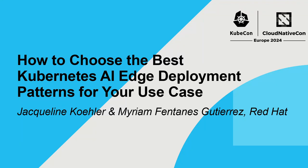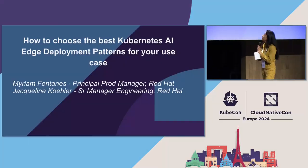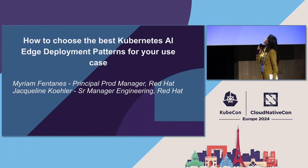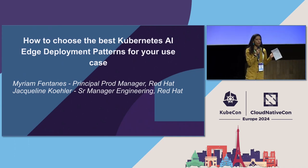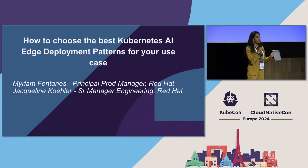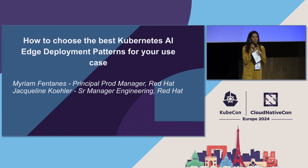Thank you so much for coming to the session. I see a lot of familiar faces. I hope you guys like it. So we're going to talk about how to choose the best Kubernetes to deploy AI workloads at the edge. My name is Miriam Fantanis. I am a product manager with OpenShift AI at Red Hat.